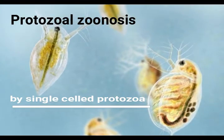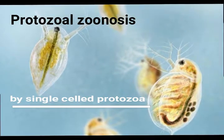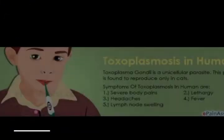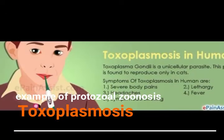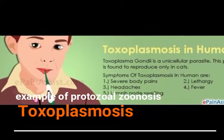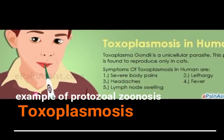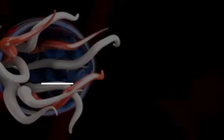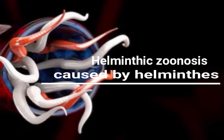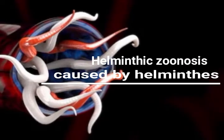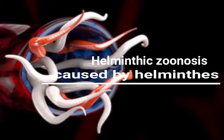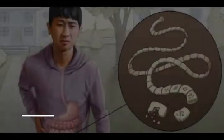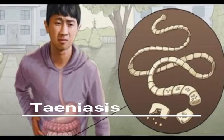Protozoal zoonosis is caused by single-cell protozoa. For example, we have toxoplasmosis. Helminthic zoonosis is caused by helminths. For example, we have taeniasis.